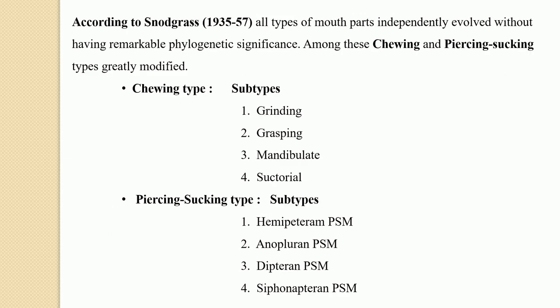According to Snodgrass, all types of mouth parts are independently evolved in insects without remarkable phylogenetic significance. They are evolved in accordance with the variable feeding habits — meaning based on what kind of feeding habit is shown by the insect, these mouth parts have independently evolved accordingly.